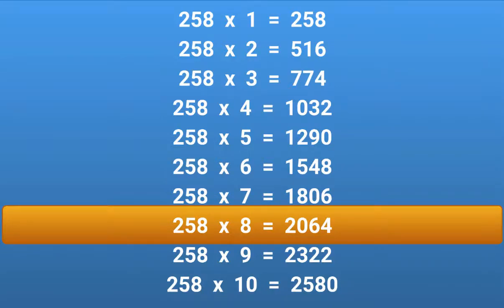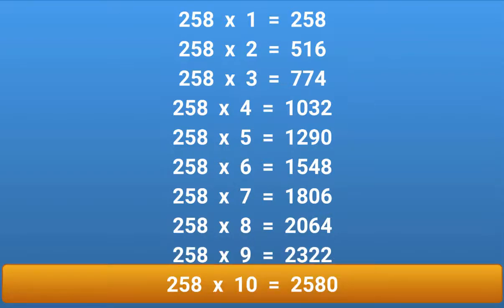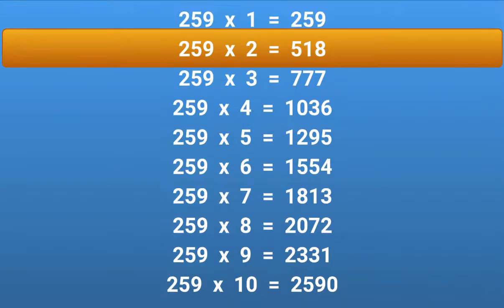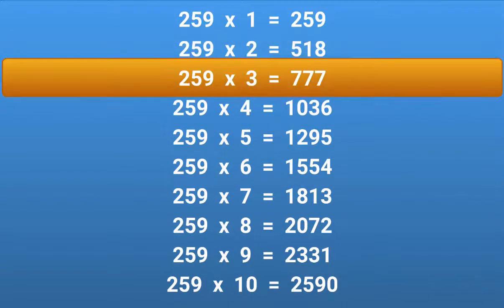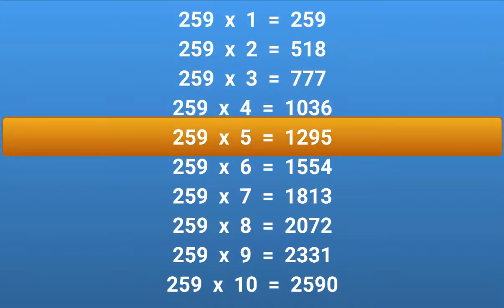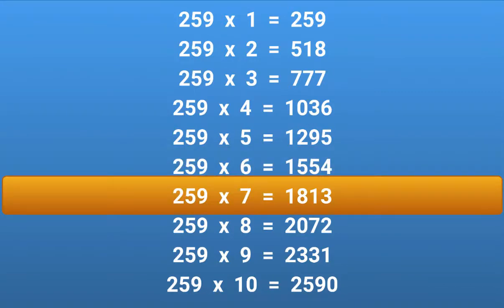258 × 10 = 2580. 259 × 1 = 259. 259 × 2 = 518. 259 × 3 = 777. 259 × 4 = 1036. 259 × 5 = 1295. 259 × 6 = 1554. 259 × 7 = 1813. 259 × 8 = 2072. 259 × 9 = 2331.